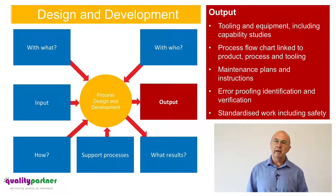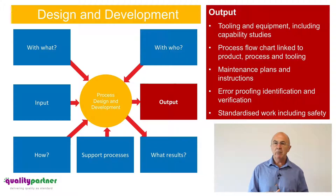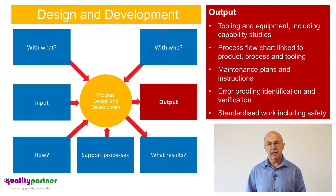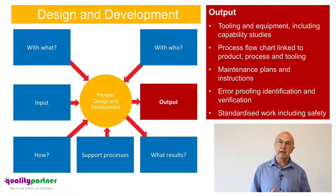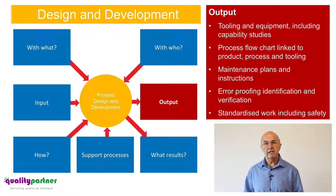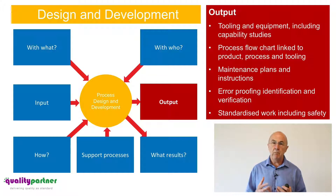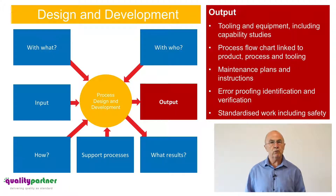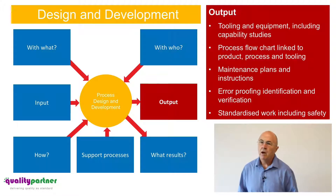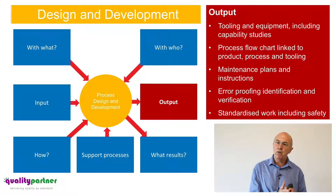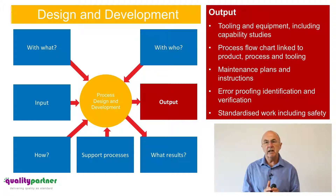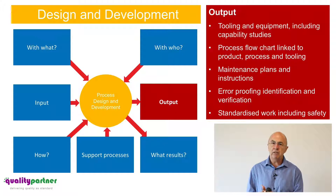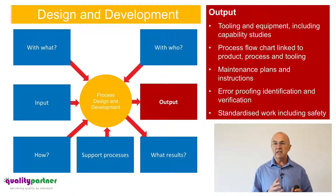Error proofing is another key output. The whole goal of IATF is about error prevention, so we need to think about how we can build effective error proofing into our process, identify where error proofing will be used, and what verification methods will be built in to validate those devices — for example, master samples of good and bad parts. There is also a change in terminology: previously we saw the term 'work instruction,' but now we need to build 'standardized work' as part of new process implementation.